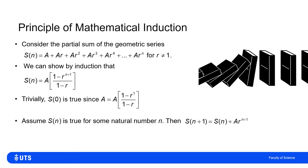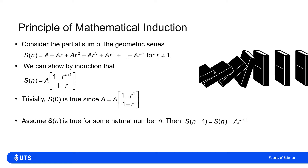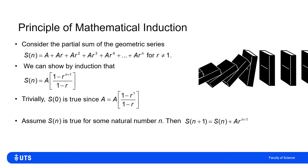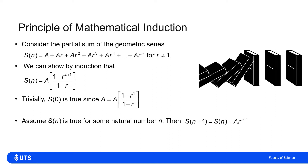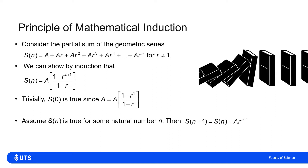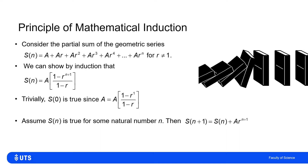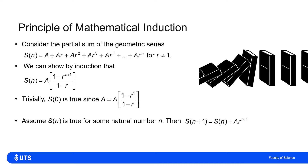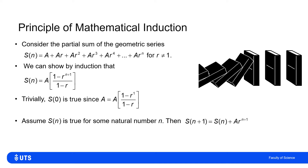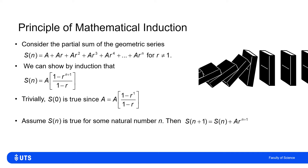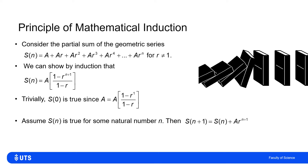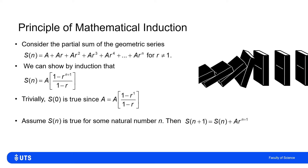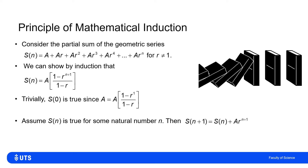Now we assume that it's true for some natural number n, and we want to show that means it's true for n+1. Increasing n to n+1 is just adding one more term to the partial sum. So if we assume the partial sum is true for n, then we add on the (n+1)th power — that is, we add on ar^(n+1).